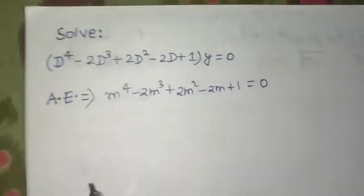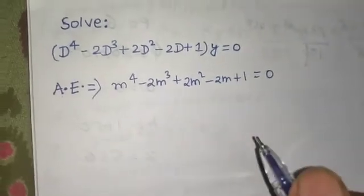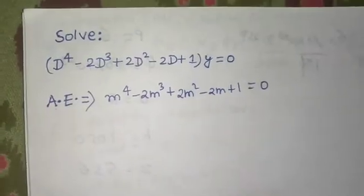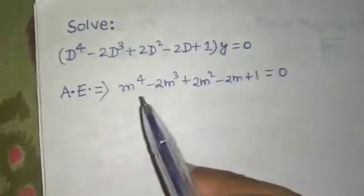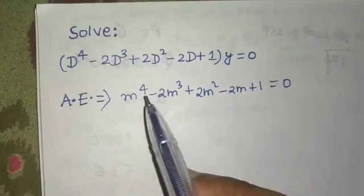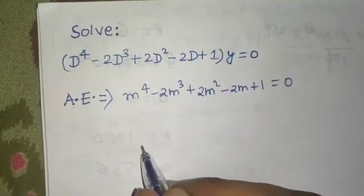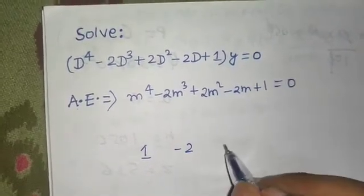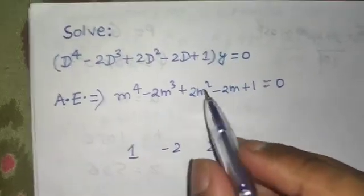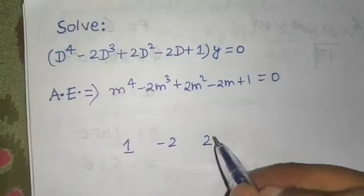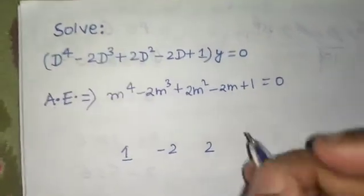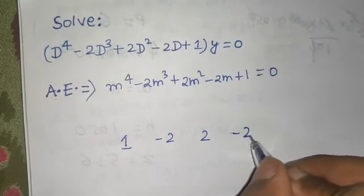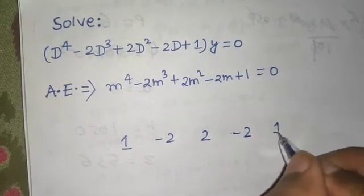Now, how to solve this — I will tell you a trick. First, focus on the coefficients of the terms. The coefficient of m to the power four is one, of m cubed is minus two, of m squared is two. If any term were not present you would write zero. The coefficient of m is minus two and the constant term is one.